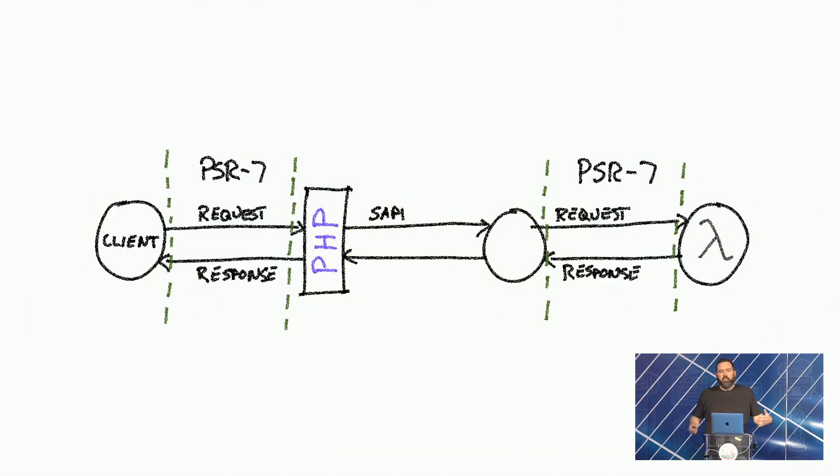So now we can see that PSR-7 actually fills another role as well — it fulfills the role of handling the request and response objects between the front controller and whatever your controller action is that's consuming those objects. The underlying idea is that HTTP messages are HTTP messages. Whether coming from a client or from a server, it's going to be exactly the same. So PSR-7 models that so that everybody is consuming things the way you might expect.